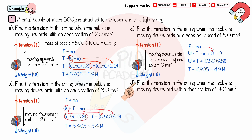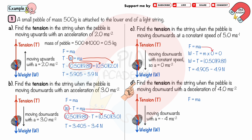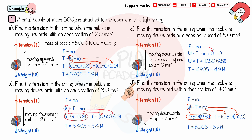Part d: Find the tension in the string when the pebble is moving downward with a deceleration of 4 m/s². The pebble moves downward, so F = W − T = ma. Substituting W = 0.5 × 9.81, m = 0.5, and a = −4 due to deceleration, we solve to get T = 6.9 N (2 significant figures).